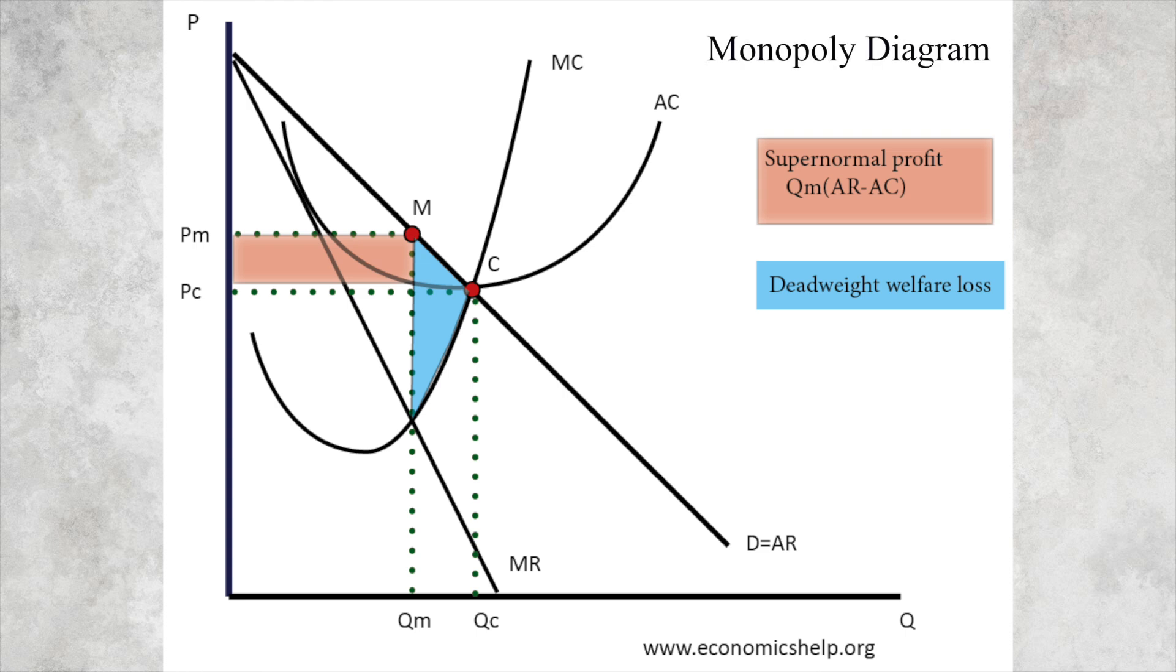So this is your basic monopoly diagram. Now if the industry was competitive, the price would be PC, quantity QC. But a monopoly has market power. It can set whatever price it wants to. And the profit-maximizing price will be at price PM, quantity QM. And that's where marginal revenue equals marginal cost.